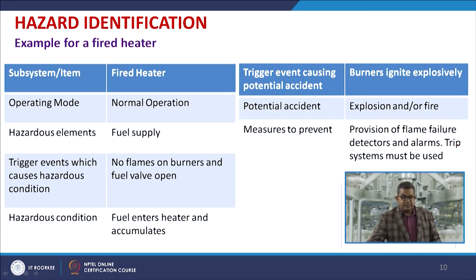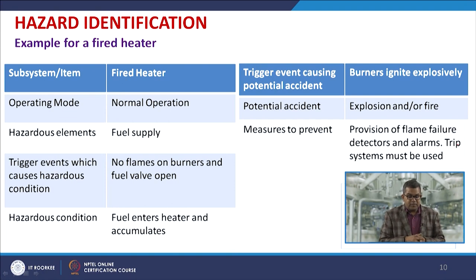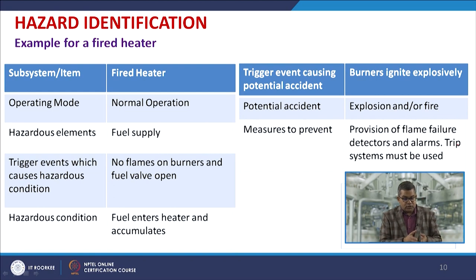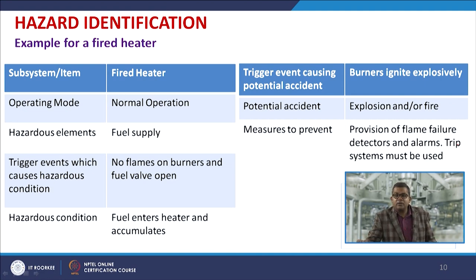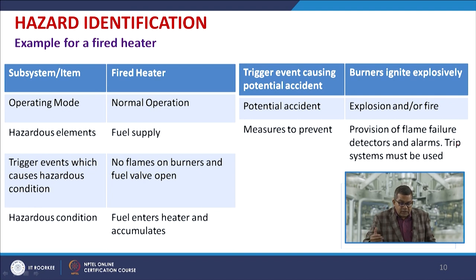As an example, consider a fired heater. Various subsystems include the operating mode — fired heater normal operation. The hazardous element is the fuel supply. The triggering event causing hazardous conditions may be no flame on the burners or a fuel valve open, leading to fuel entering and accumulating in the heater. The potential accident is explosion or fire. Measures to prevent this include provision of flame failure detectors, alarms, and trip systems.